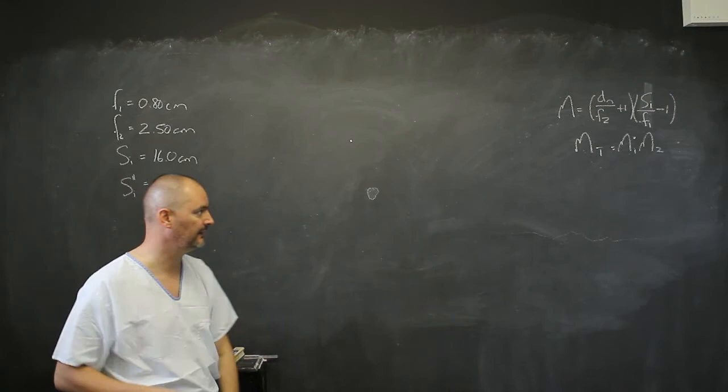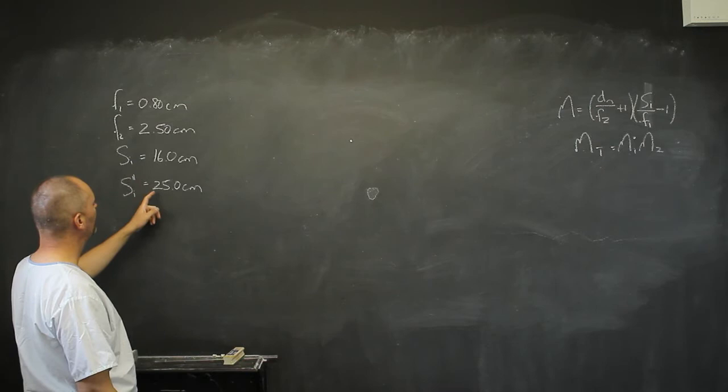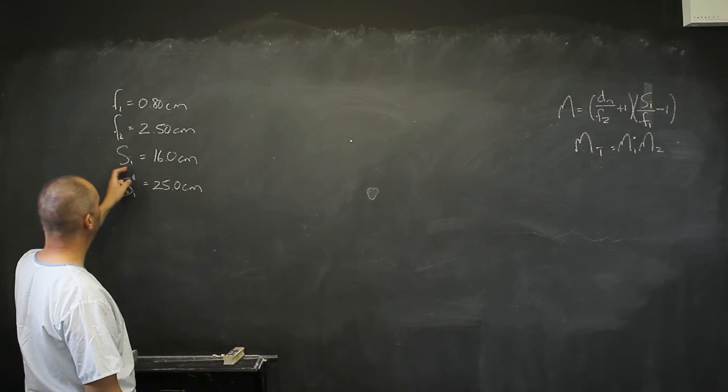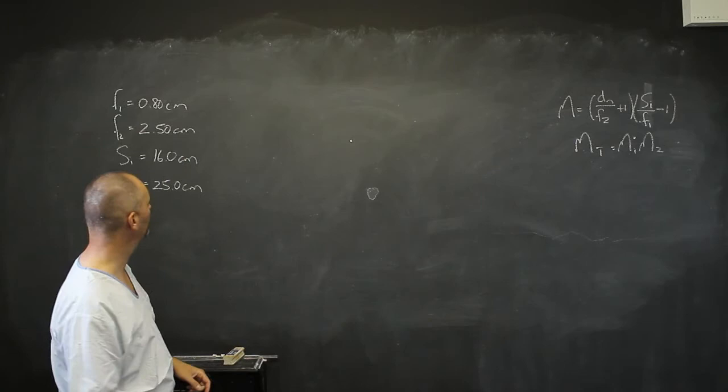And that is where we have this SI double prime. It must be at 25 centimeters, but the only thing that we are told is that this first lens has an image distance of positive 16 centimeters. It's going to be a real image.